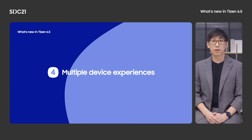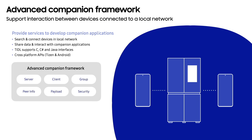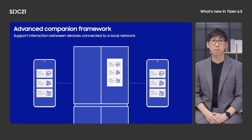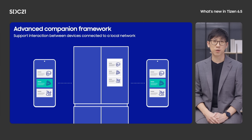Tizen 6.5 introduced four new multi-device experience frameworks. Let's take a look at one at a time. The advanced companion framework facilitates multi-device app development, providing interactive communication among devices in a local network. For example, an AI-embedded fridge can recommend recipes to provide a healthy yet convenient meal out of available ingredients from leftover food. The members of the family receive the recipes on their phones and select one by voting, making for a fun moment for the entire family.